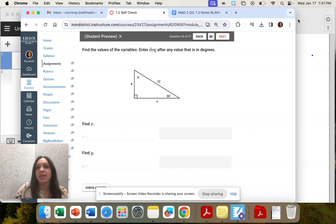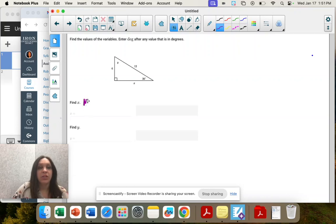X is a side length, so no degrees. Do not put degrees on a side length. That's a distance, but we can put degrees on our angle, which is Y.